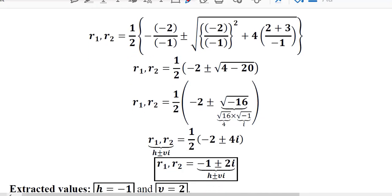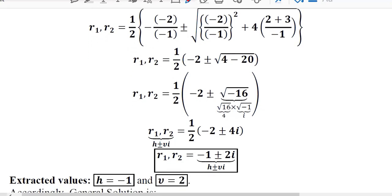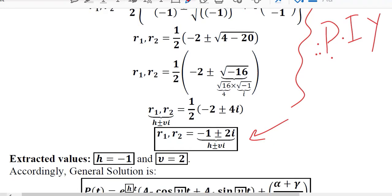We can understand the value of h and we can understand the value of v. Here we have extracted these values. This simplification is something that I expect you can handle easily. So this is a DIY for you. And this is r1 and r2, this is h plus minus vi. And the value of h is minus 1, the value of v is 2.